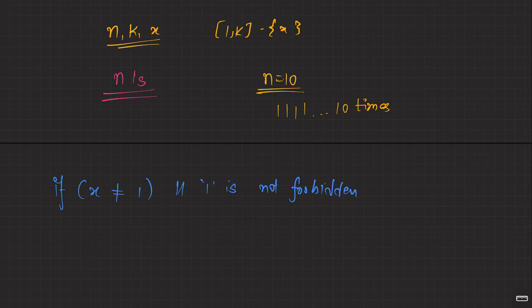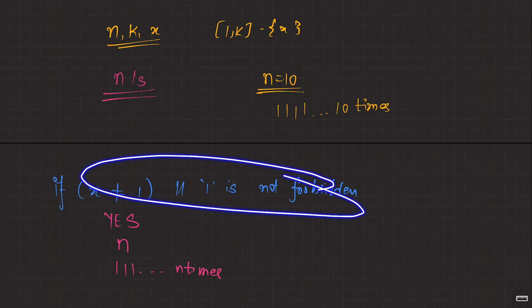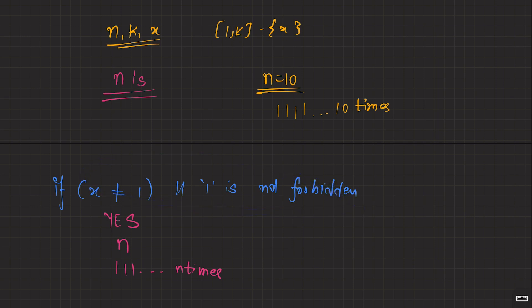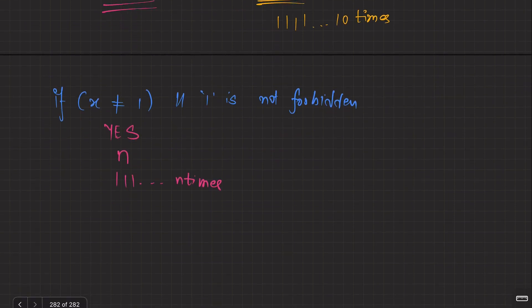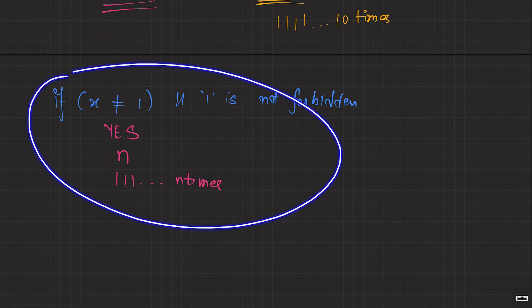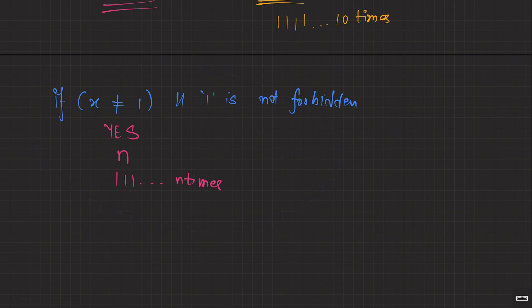If x is not equal to 1, meaning 1 is not forbidden, there is always a way. Print yes and what are those elements? Take n elements - just print 1 n times. This is a very easy observation: if 1 was not forbidden, just take all the ones and make the number n. If 1 was forbidden, we'll have to investigate further.